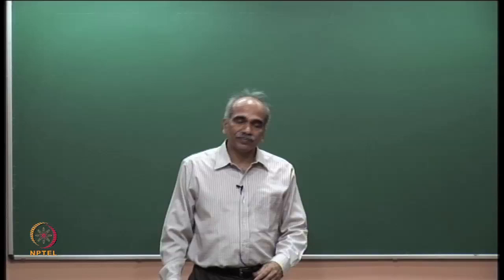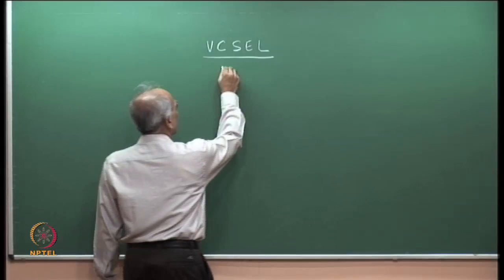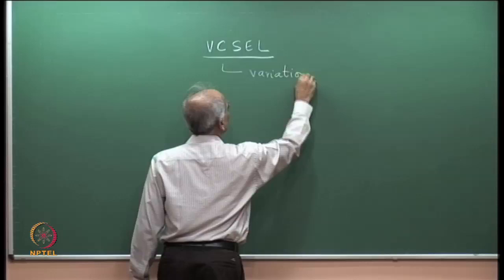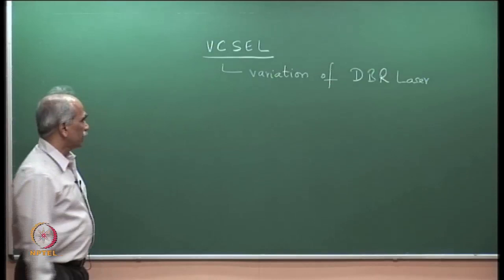Today we will discuss the vertical cavity surface emitting laser, or VCSEL. This is a variation of the DBR laser. We can think of it as a variation of the distributed Bragg reflector laser, which we discussed in the last class along with DFB lasers.